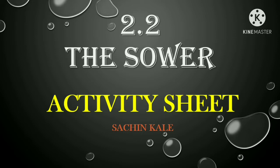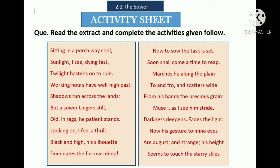Now see the first activity sheet. Read the extract and complete the activities given below. There is an extract from the left, and these are the answers from the left. The first line of the extract is 'Sitting in a porch way cool' and the last line is 'And seems to touch the starry skies'. Now see the first question.